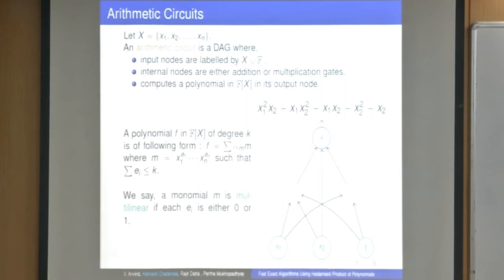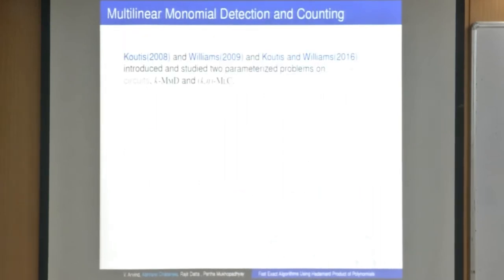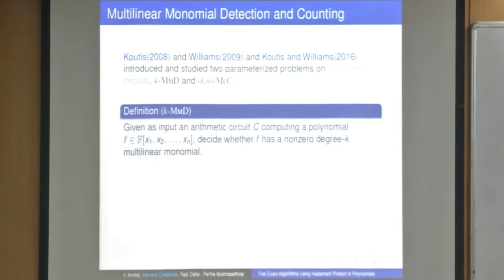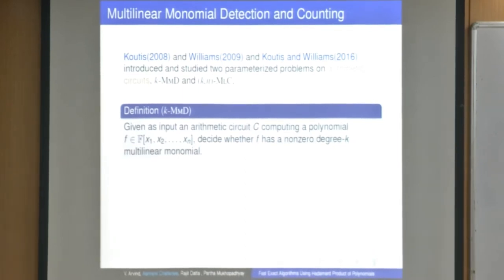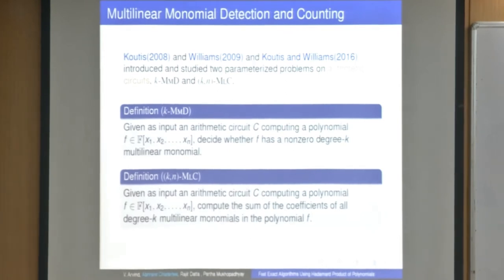In this talk we will look at mainly two problems first studied by Cootes and Williams. The first one is multilinear monomial detection: given a polynomial as an arithmetic circuit, we want to know does there exist a degree k multilinear term. The second one is the counting version: we want to compute the sum of the coefficients of all the degree k multilinear terms.